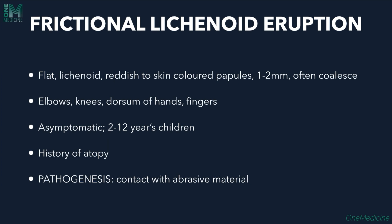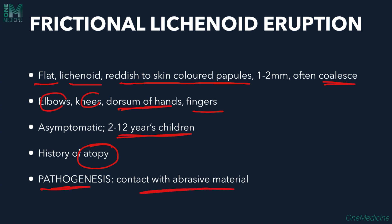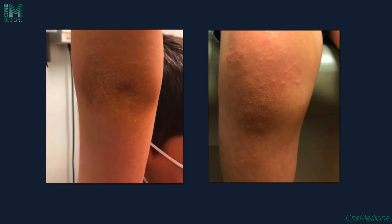Frictional lichenoid eruption presents with flat lichenoid reddish to skin-colored papules that often coalesce, present on the elbows, knees, dorsum of hands, and fingers. They are asymptomatic and seen in children aged 2 to 12 years. History of atopy is present. Pathogenesis involves contact with abrasive material.